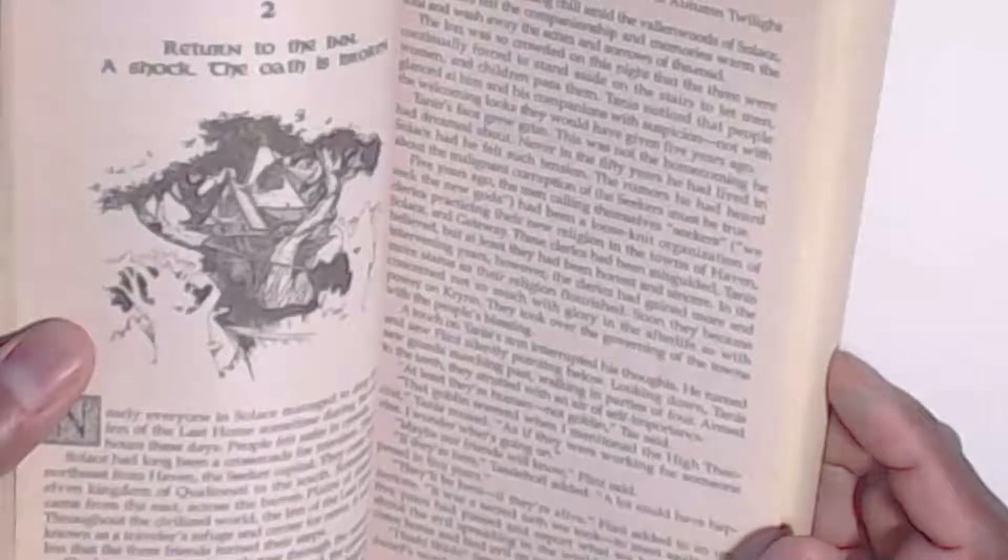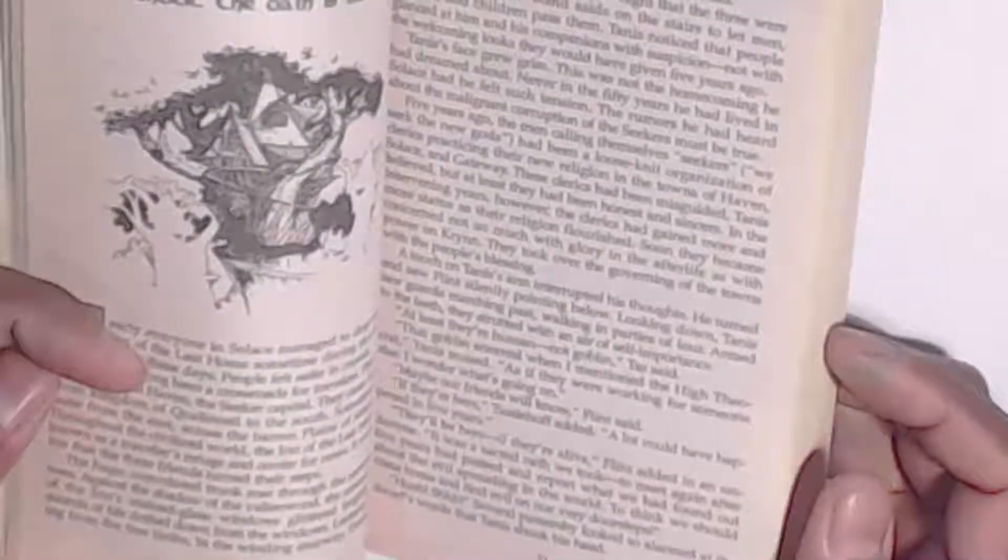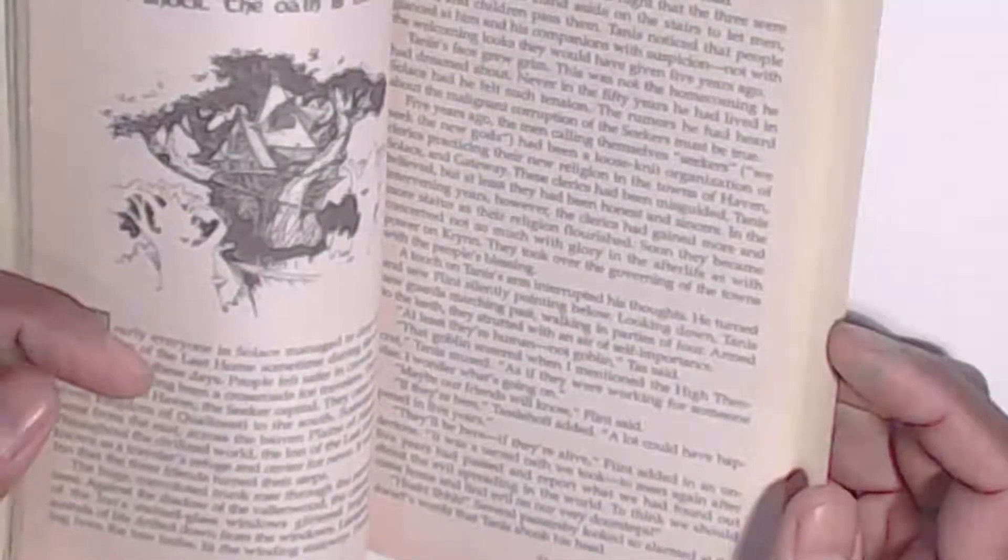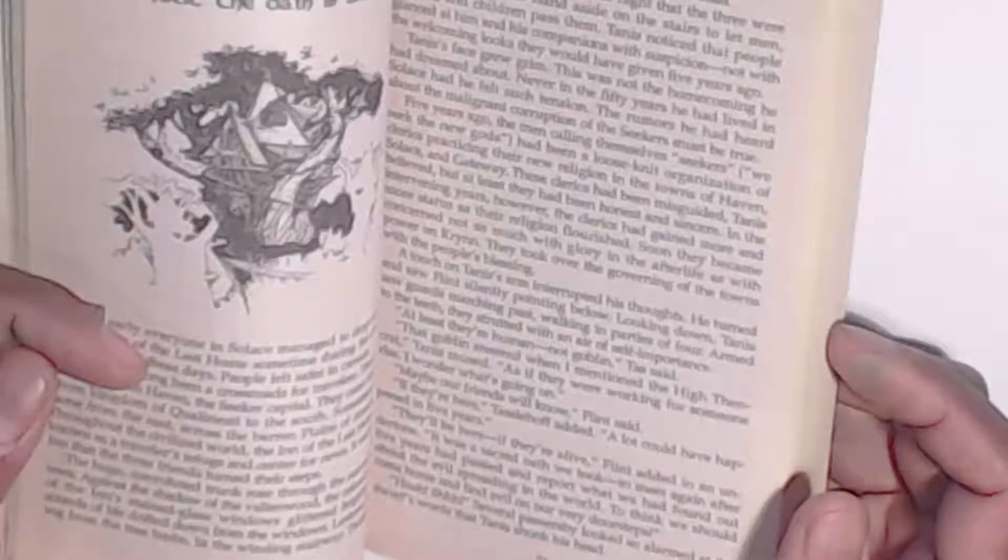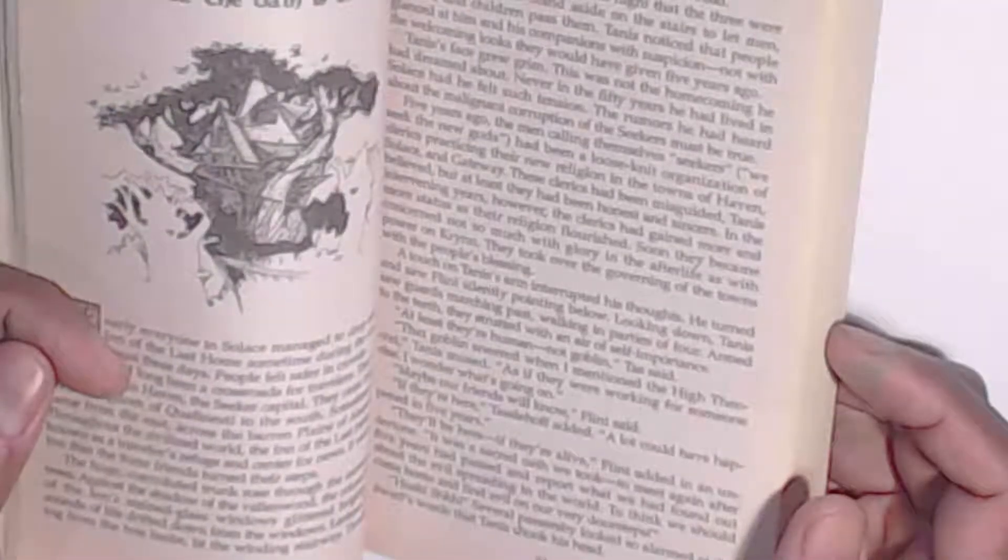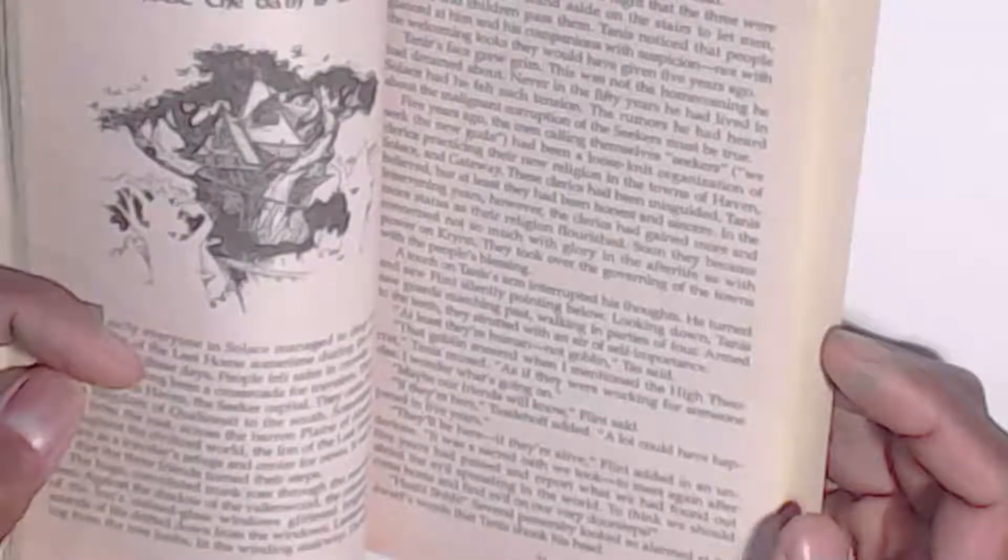They'll be here, if they're alive, Flint added in an undertone. It was the sacred oath we took: to meet again after five years had passed and report what we had found out about the evil spreading in the world. To think we should come home and find evil on our very doorsteps. Hush. Some little passerby looked so alarmed that the dwarf swirled. The Tanis shook his head.